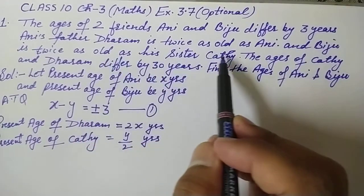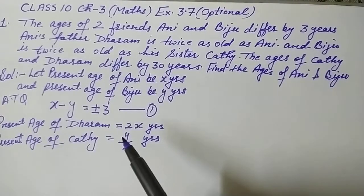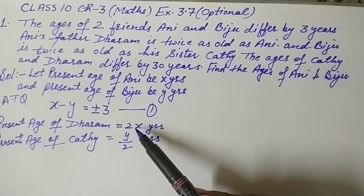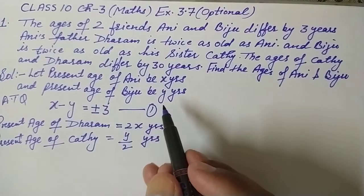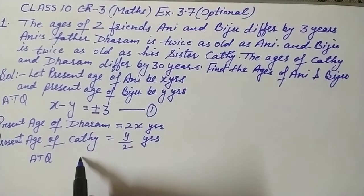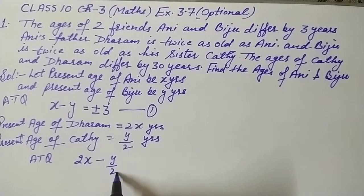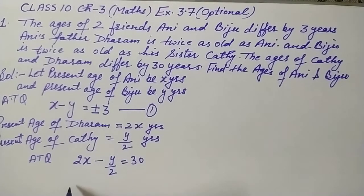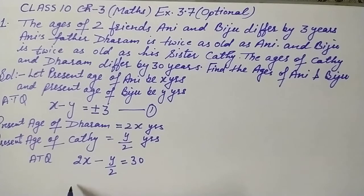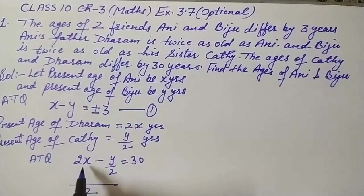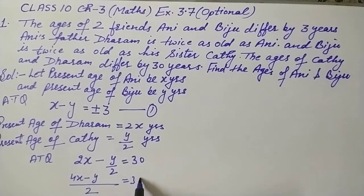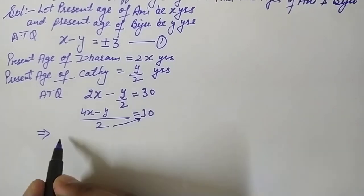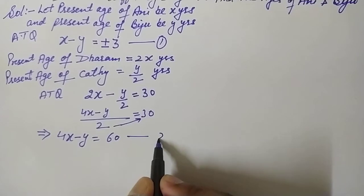The next line is that the ages of Cathy and Dharam differ by 30 years. It is clear that Dharam is elder than Cathy, so we write: Dharam's age two X minus Cathy's age Y over two equals 30. Taking the LCM of 2, we get 4X minus Y equals 60. This is our second equation.